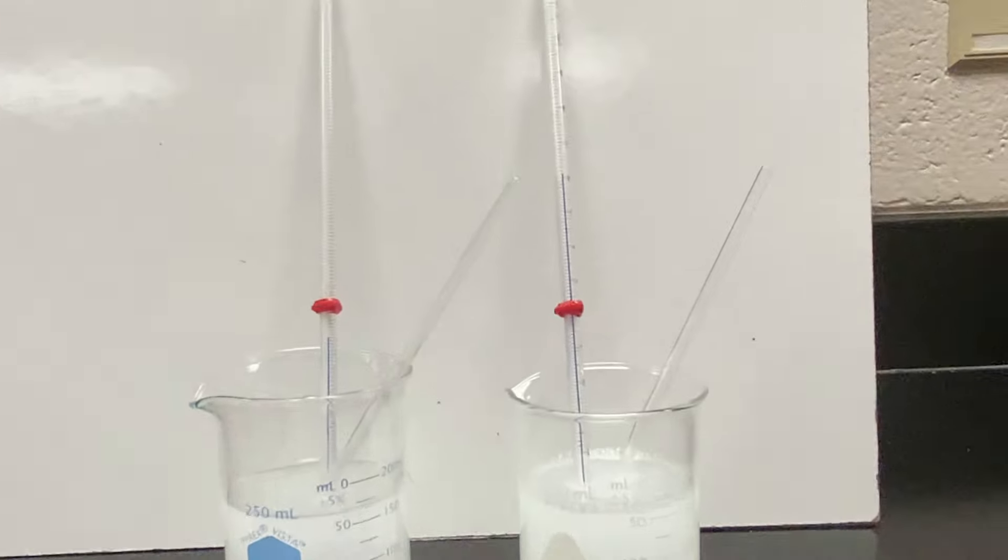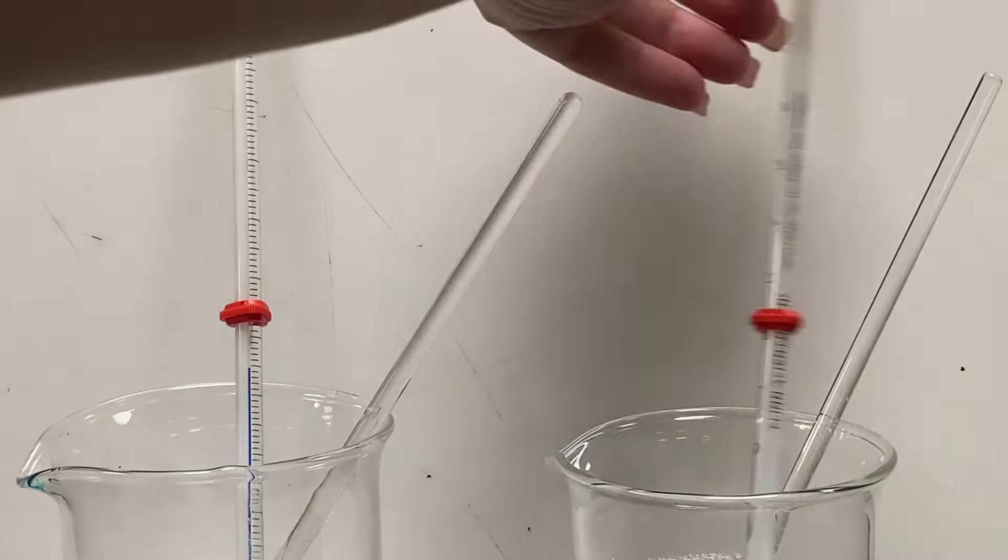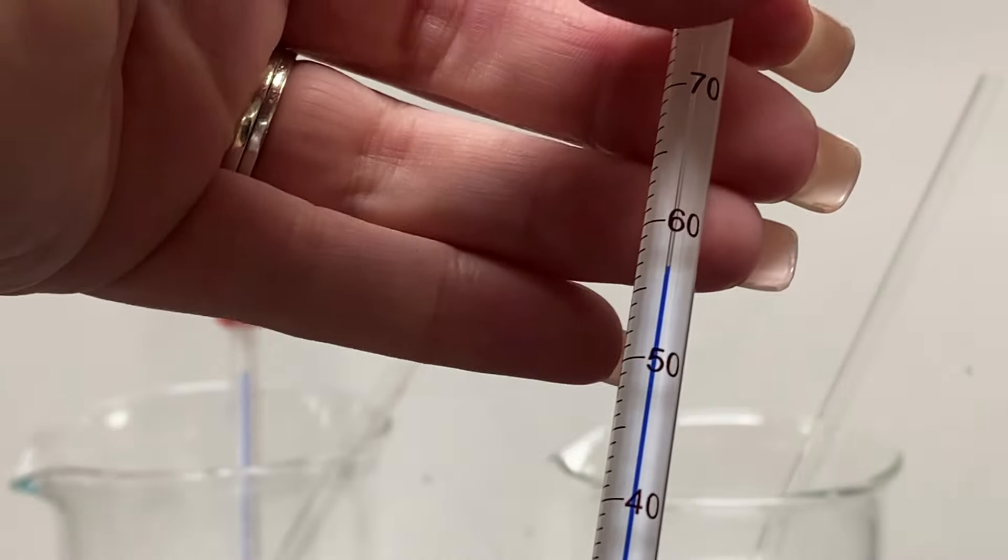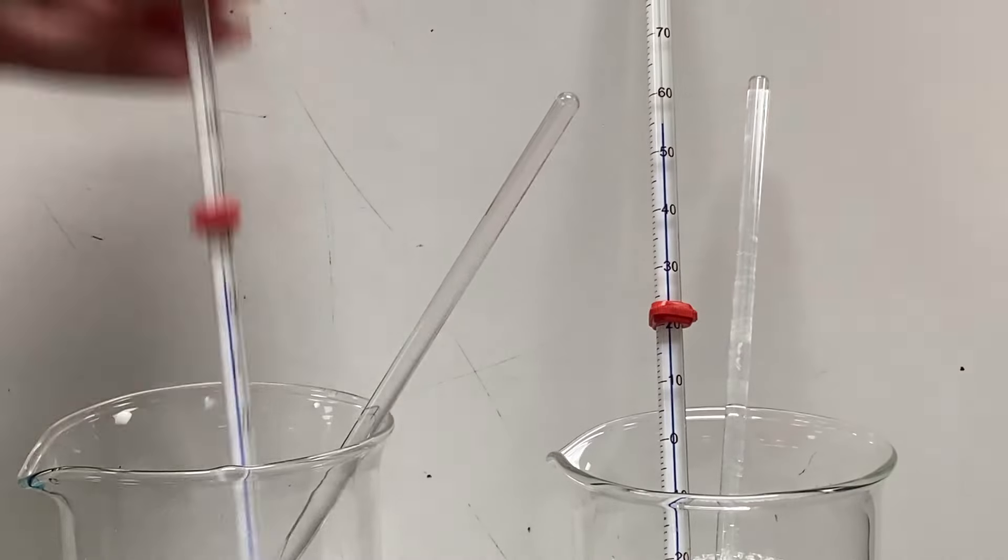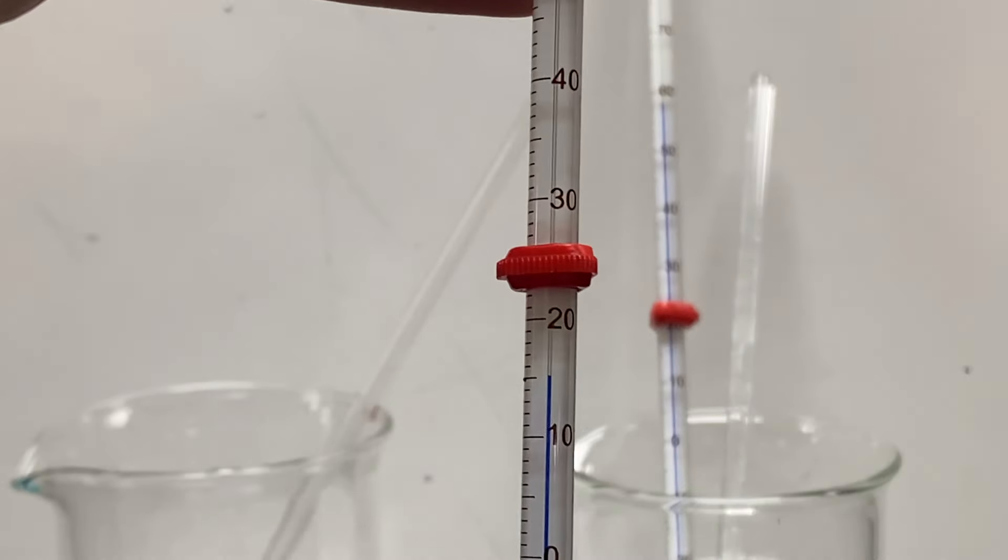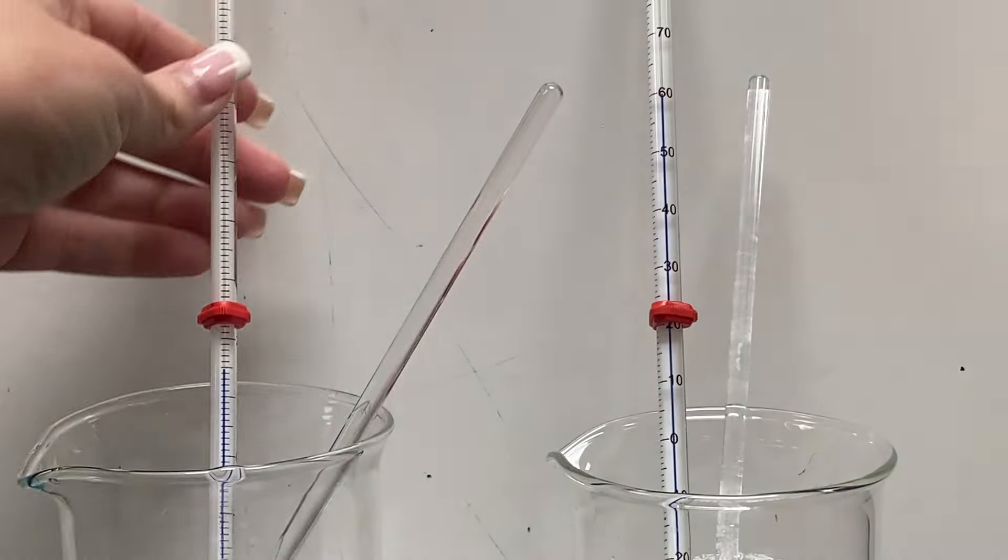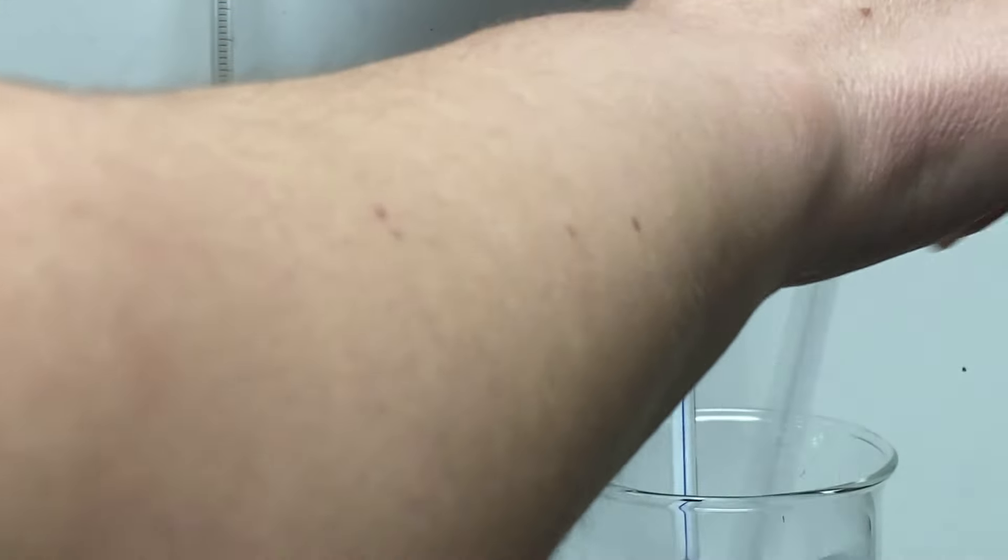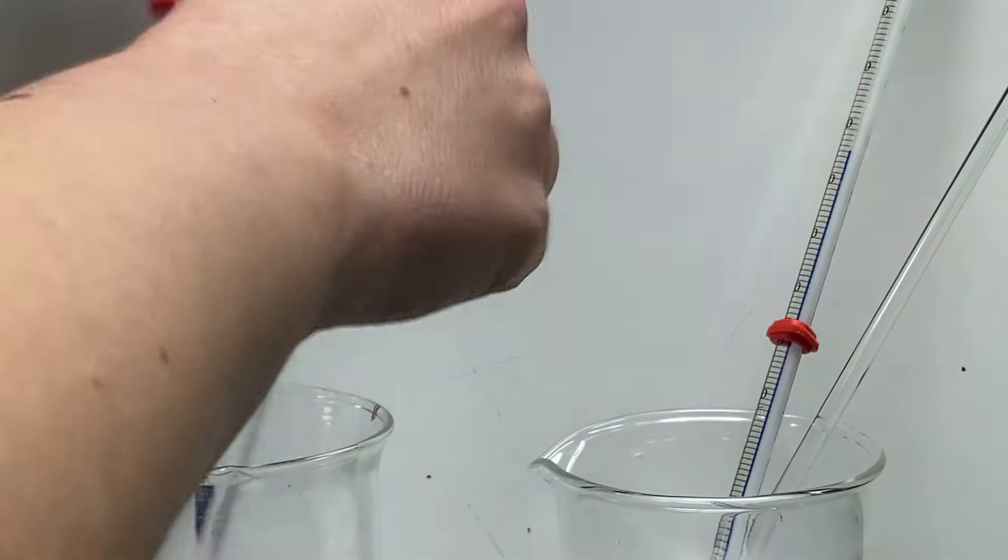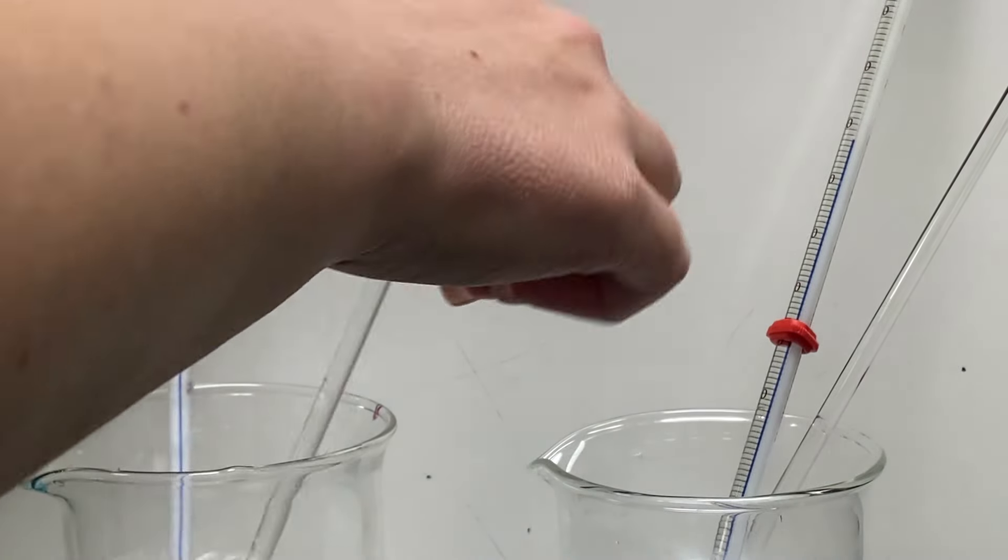This is a really awesome experiment to do in the classroom because you can easily put this in a Ziploc bag and just give it a good mix and pass it around to the class. And they can see that the calcium chloride is heating up and that the sodium thiosulfate is cooling down. It's just a really cool demo to do.